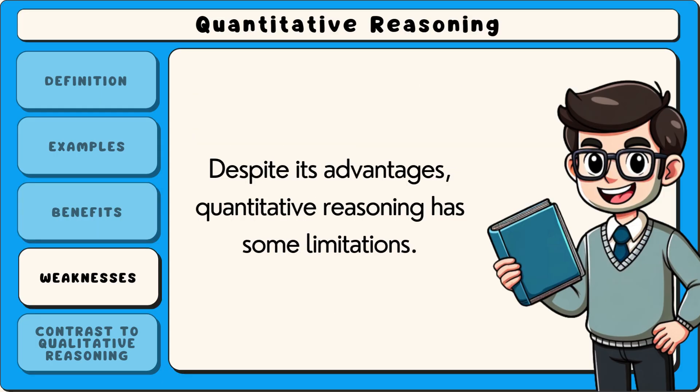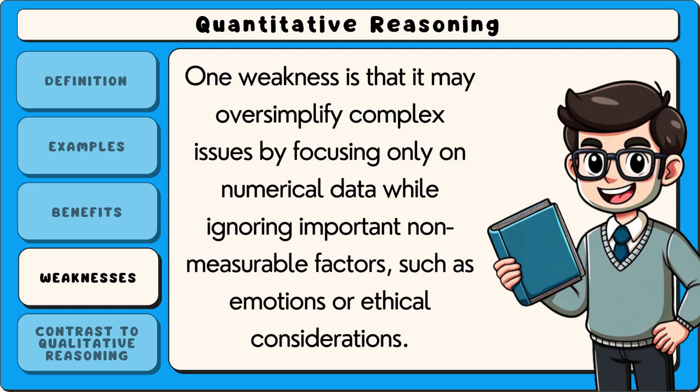Despite its advantages, quantitative reasoning has some limitations. One weakness is that it may oversimplify complex issues by focusing only on numerical data, while ignoring important non-measurable factors, such as emotions or ethical considerations.